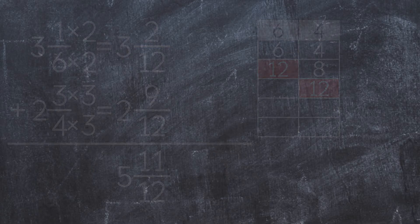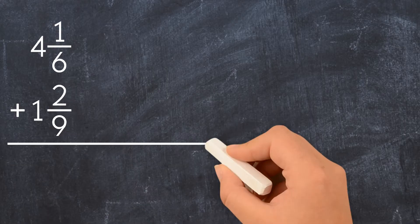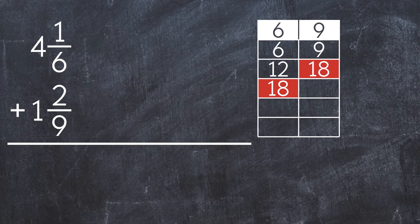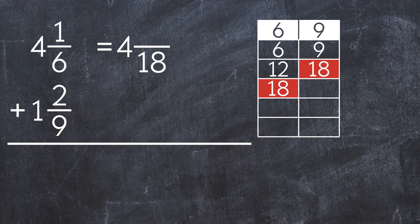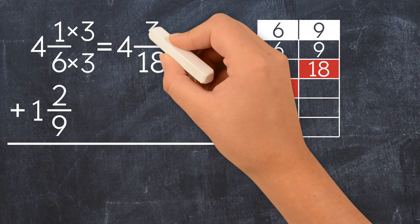Let's do another example: 4 and 1 sixth plus 1 and 2 ninths. Let's set this problem vertically. First, we find the common denominator. The common denominator between 6 and 9 is 18. To get 18 in the denominator, we multiply 6 times 3. We also have to multiply the numerator by 3 to get 4 and 3 eighteenths.